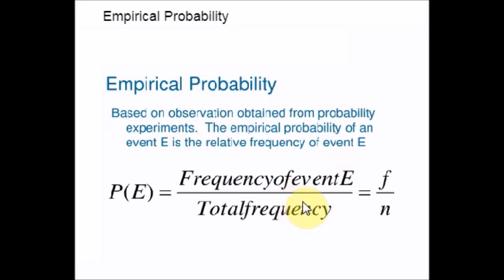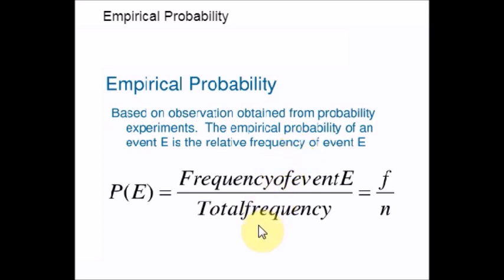The mathematical definition of Empirical Probability can be compared with the mathematical definition of Theoretical Probability. If you want more information about Theoretical Probability, you can refer to our previous video. The mathematical definition of Theoretical Probability uses possible events and outcomes, whereas Empirical Probability uses the actual number of events and trials — the frequency — from an experiment or sampling.